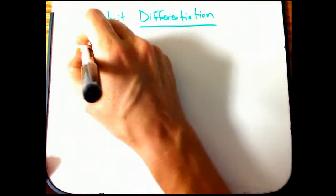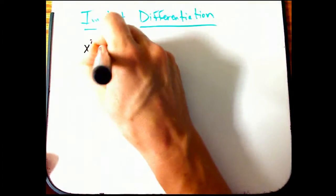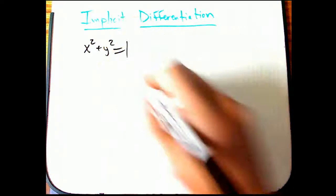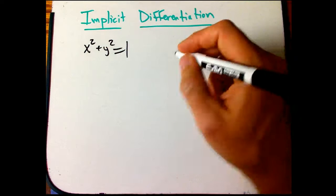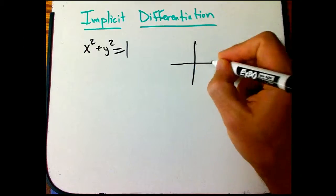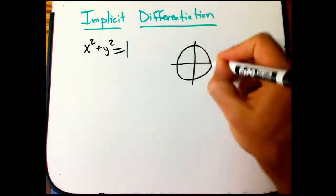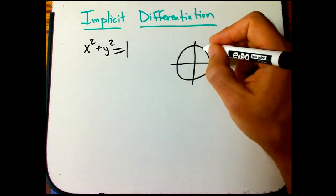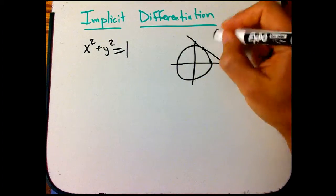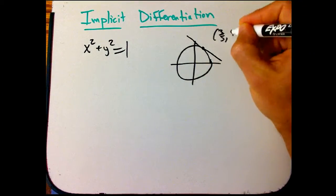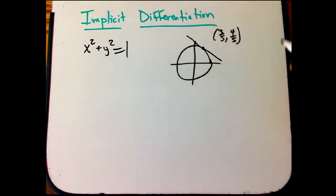So I'm going to start with my favorite example. Let's look at a circle that's defined implicitly by x squared plus y squared equals one. And what I want to do is I want to find the slope of the tangent line at a particular point. Let's say three-fifths comma four-fifths. That's on the circle because three, four, five is a Pythagorean triple.